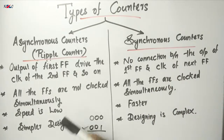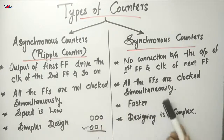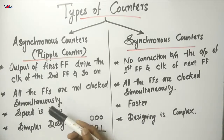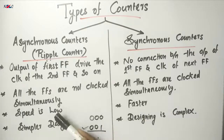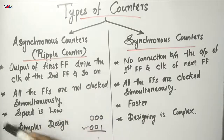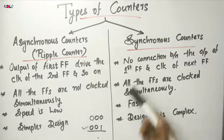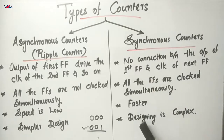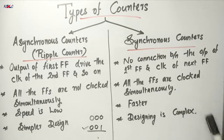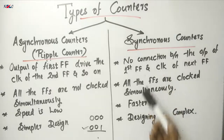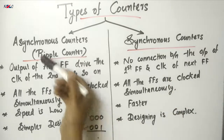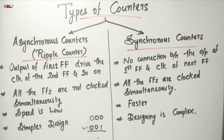Because of the rippling of the clock signal and the delay in the availability of the clock in each flip-flop, asynchronous counters are slower in operation. In a synchronous counter, since all the flip-flops receive the clock simultaneously and can work simultaneously, it is faster compared to the asynchronous counter.